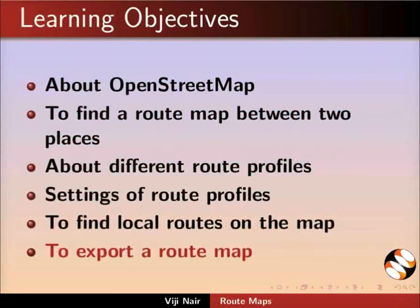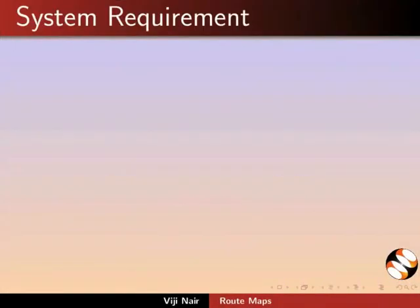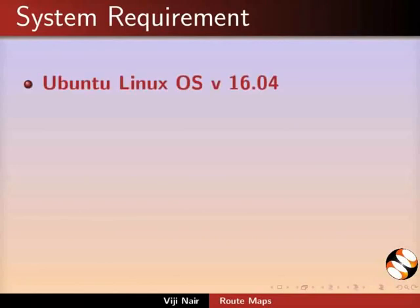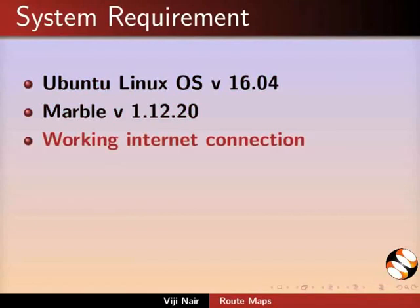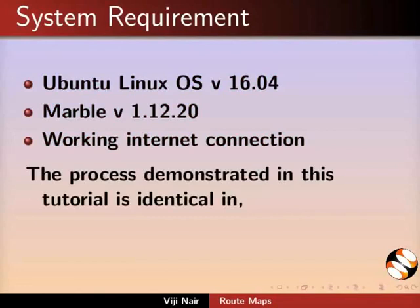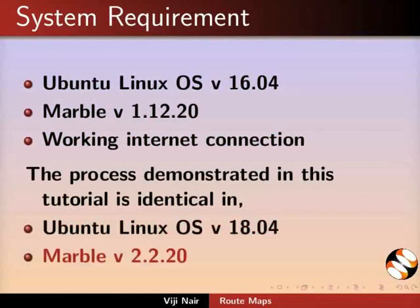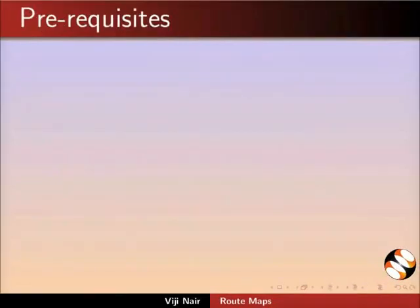And to export a route map. To record this tutorial, I am using Ubuntu Linux OS version 16.04, Marble version 1.12.20, and a working internet connection. The process demonstrated in this tutorial is identical in Ubuntu Linux OS version 18.04 and Marble version 2.2.20.